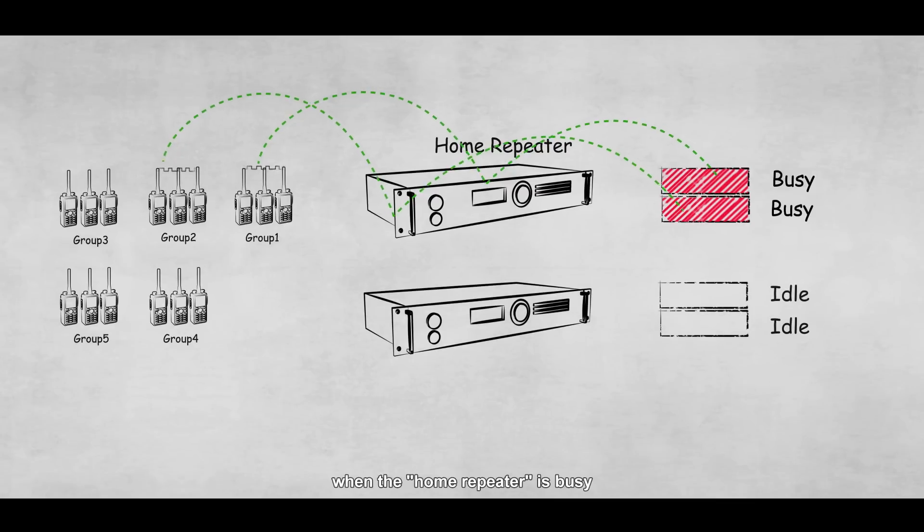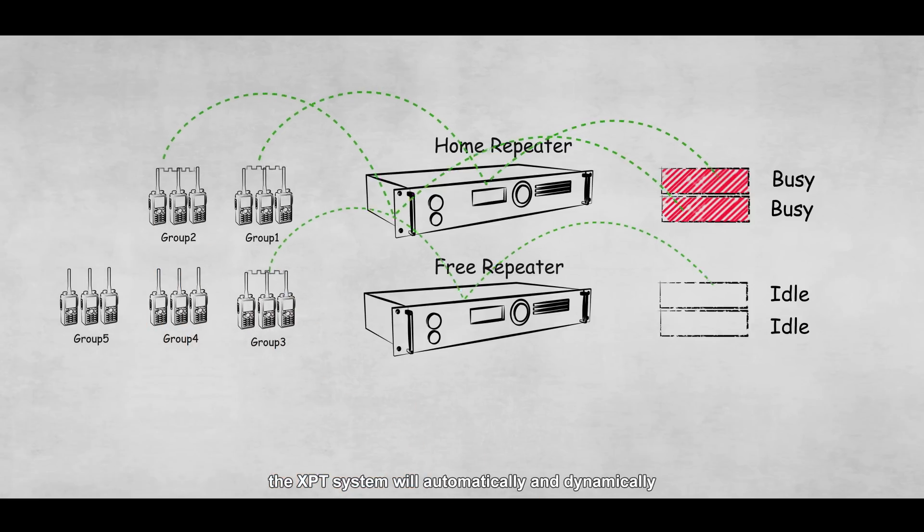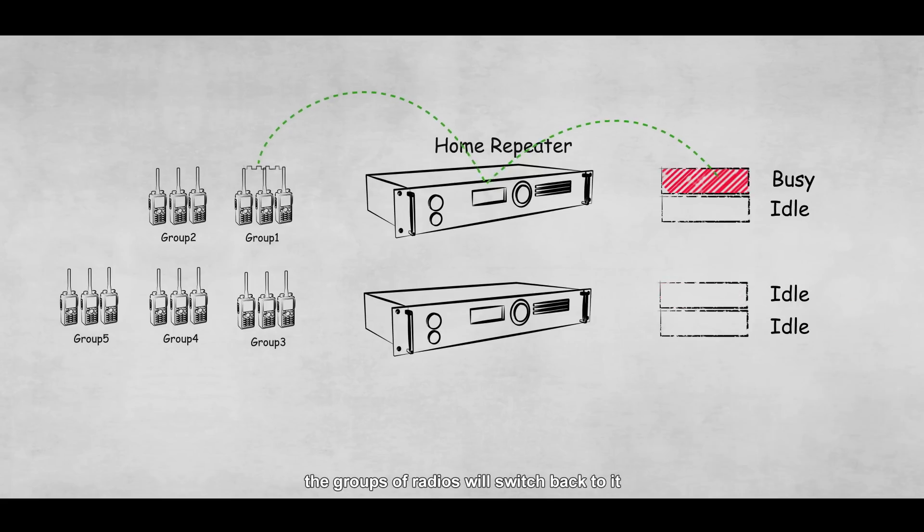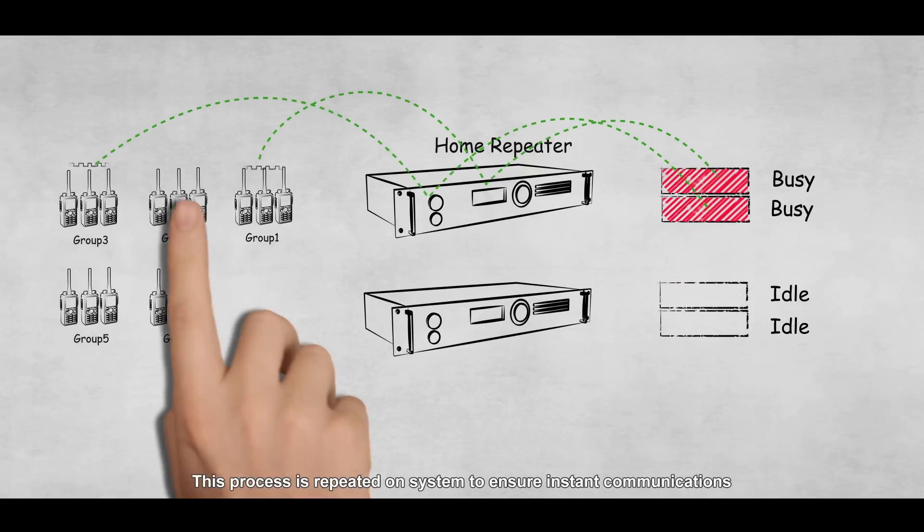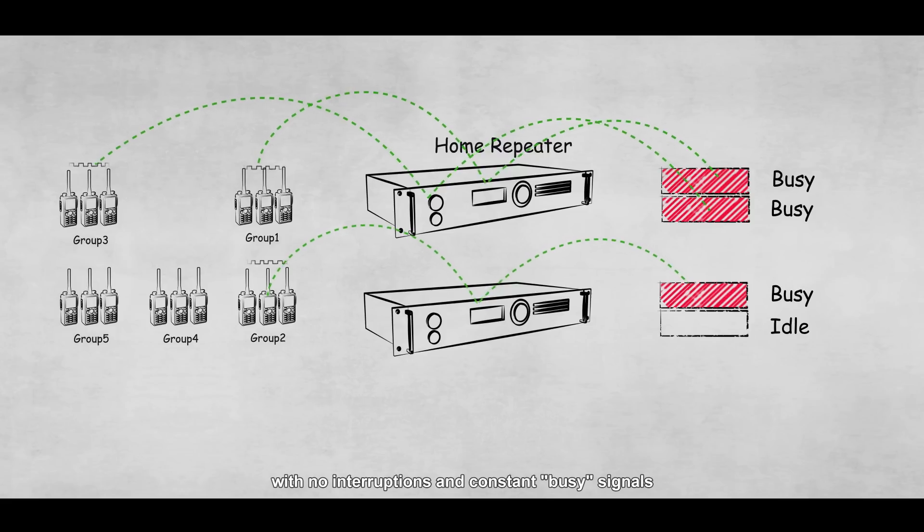Now, when the home repeater is busy, the XPT system will automatically and dynamically assign a free repeater, which temporarily provides available channels to initiate the call. Once the home repeater has available resource, the groups of radios will switch back to it. This process is repeated on system to ensure instant communications with no interruptions and constant busy signals.